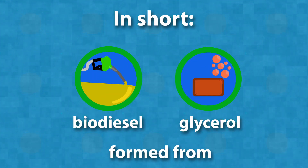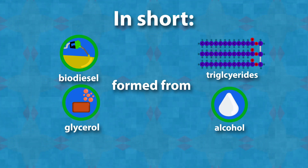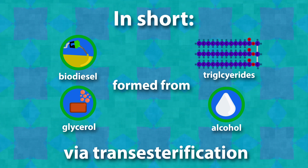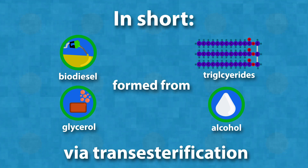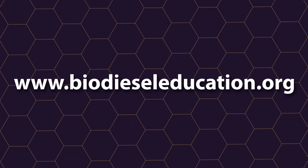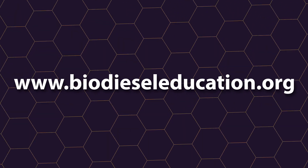In short, biodiesel and glycerol are formed by triglycerides and alcohol via transesterification. Visit www.biodieseleducation.org for more information.